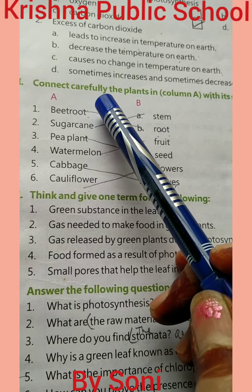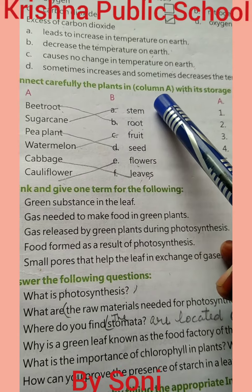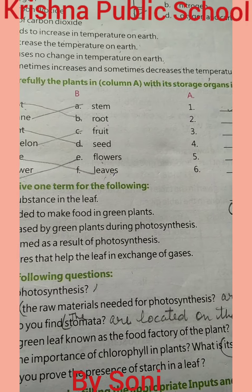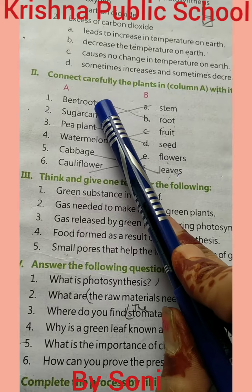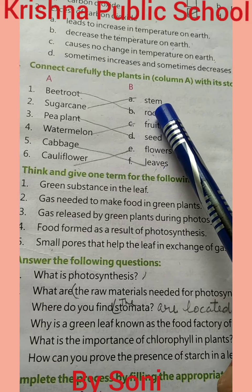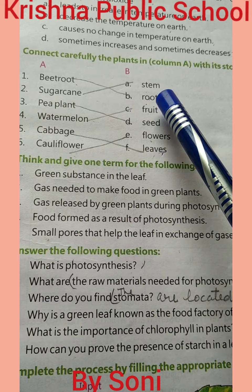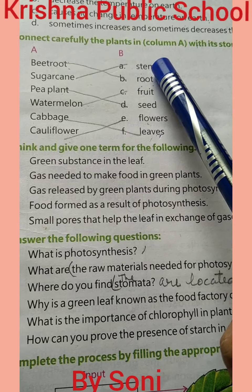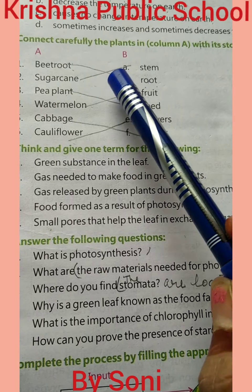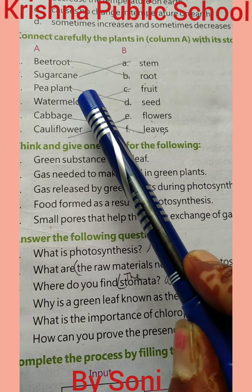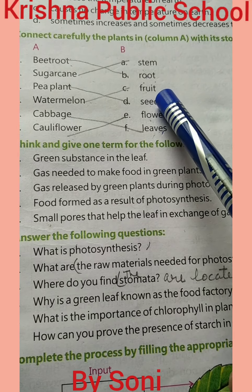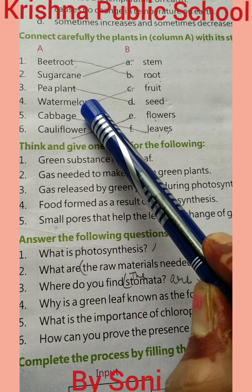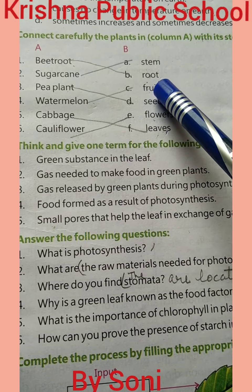Next: connect carefully the plants in column A with the storage organ in column B — the match the following. Beetroot — beetroot kya hota hai? Root. So we match beetroot with root. Sugar cane — sugar cane kya hota hai? Sugar cane is a stem. Pea plant — pea plant kya hai? Seed, kyun ki iske andar seeds hote hain jo pea ke andar hote hain. Watermelon — we match watermelon with fruit, kyun ki yeh ek fruit hai.